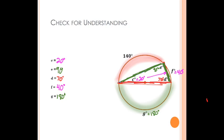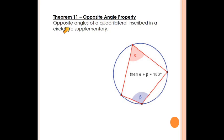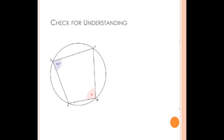We used our properties and what we know about inscribed angles to do that problem. Let's learn another property: the opposite angle property. Opposite angles of a quadrilateral inscribed in a circle are supplementary. Here I've got a quadrilateral — a four-sided figure — inscribed in this circle with all the vertices laying on the circle, and these opposite angles are going to be supplementary. In our check for understanding, this angle is opposite this angle in the inscribed quadrilateral. So 84 plus A equals 180. Subtracting 84 from each side, A equals 96 degrees.